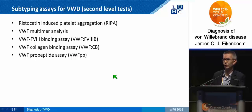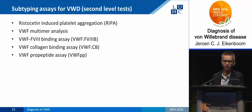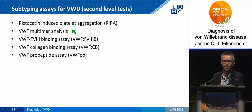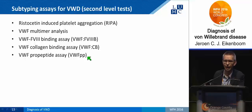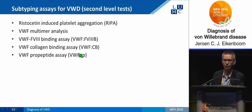Moving on to subtyping assays — the second-level tests — several tests are required to make the specific subclassification of fulvirate disease: the ristocetin-induced platelet aggregation assay, multimer analysis, the binding of factor VIII to fulvirate factor, and sometimes the collagen binding assay. I will also discuss the fulvirate factor pro-peptide assay, although this is not part of the current classification scheme.